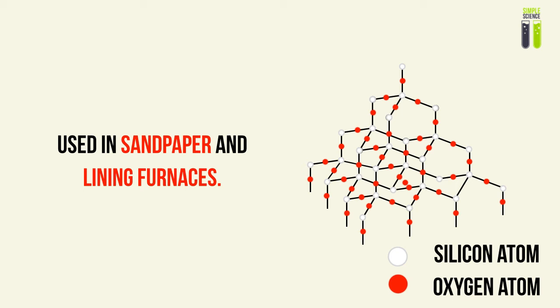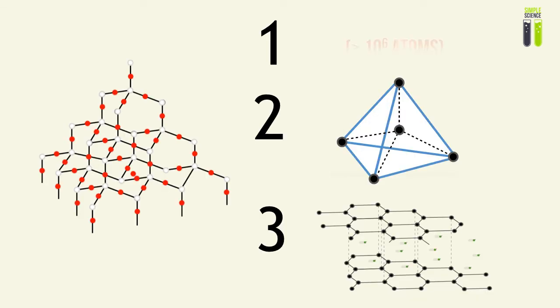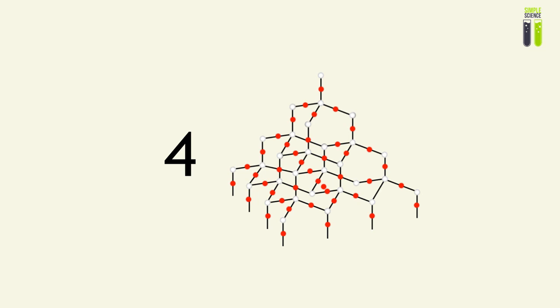To summarize: a macromolecule is a structure with more than a million atoms. The first type of macromolecule we encounter has a tetrahedral bonding structure between its atoms — this includes diamond and silicon dioxide. Graphite is another form of macromolecule; it is held together between layers by weak forces, but each carbon atom is covalently bonded to three other carbon atoms within the sheet, which gives it a high melting point — a distinctive and somewhat surprising property.